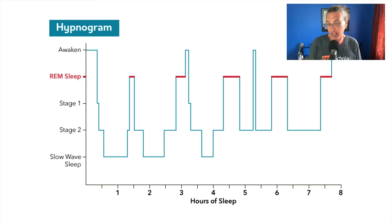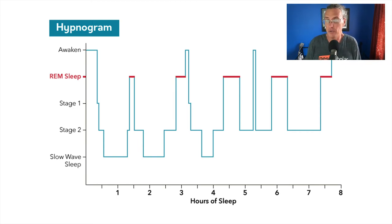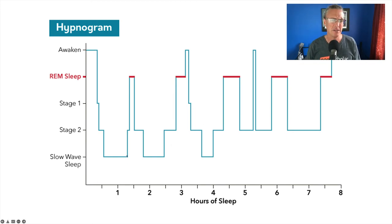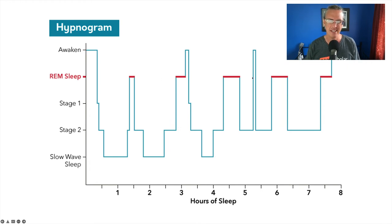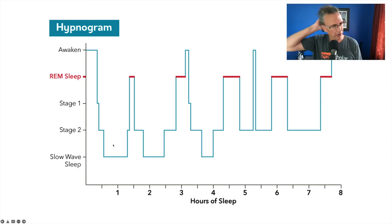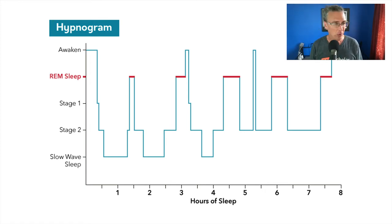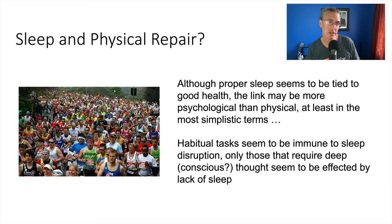So what has the EEG told us about sleep? Not a whole lot, really — it's created more questions than answers. We have a sense of the process happening during sleep, but now we can ask: what's going on in deep sleep? Why do we need a lot of it early and then less? What's happening in dream states? These seem to be the important states — why are they important and what do they do?